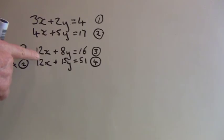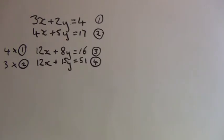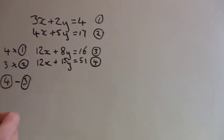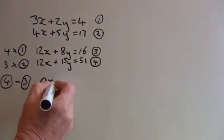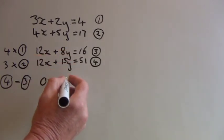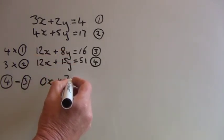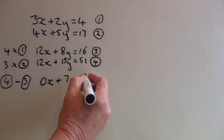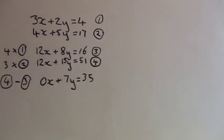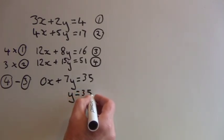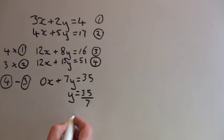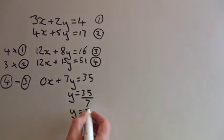Now as we can see we've got the x values the same, so that leads us to subtracting one from the other. If I subtract equation 3 from equation 4, we get 0x plus 7y equals 35. So from this I can find the value of y: y equals 35 divided by 7, therefore y equals 5.